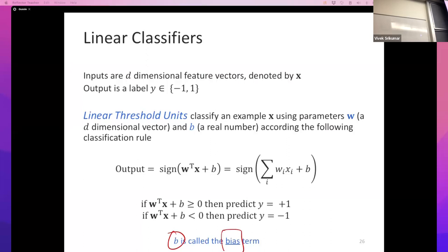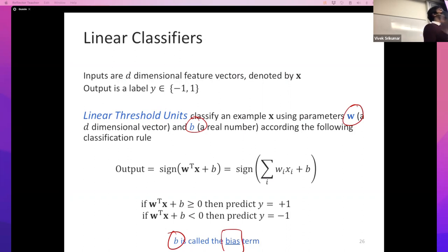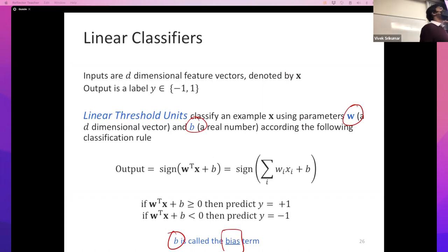A student asks: how do you select the bias? Good question - equivalently, how do you take a dataset and get the bias and weights from it? I usually call w the weights, and together with the bias they define the classifier.